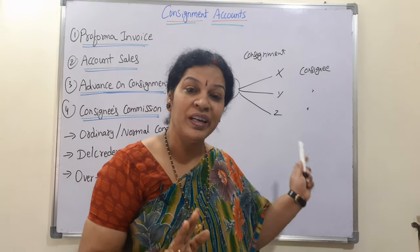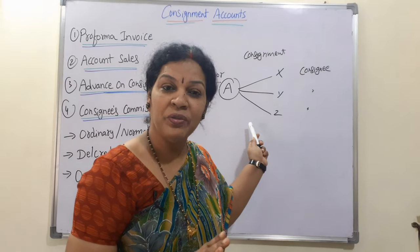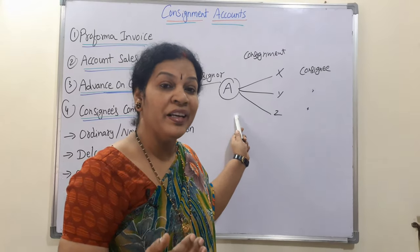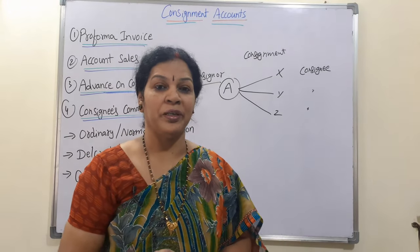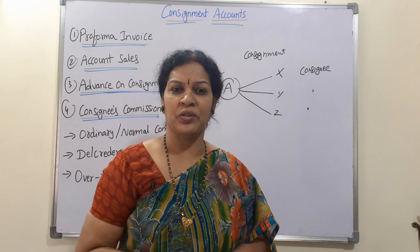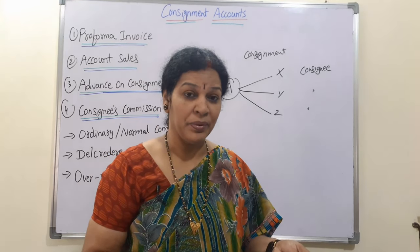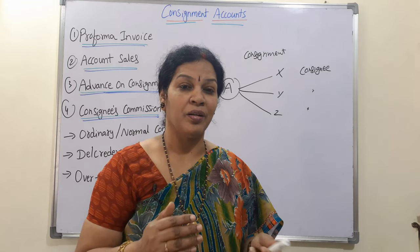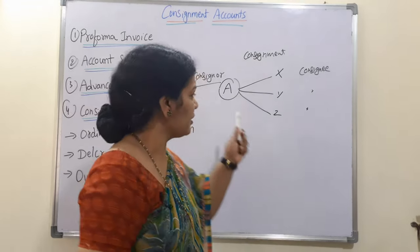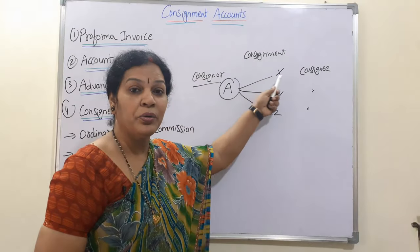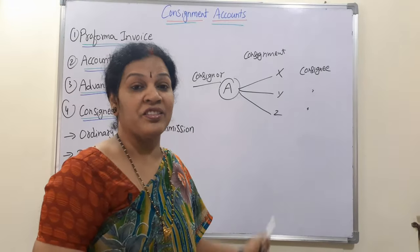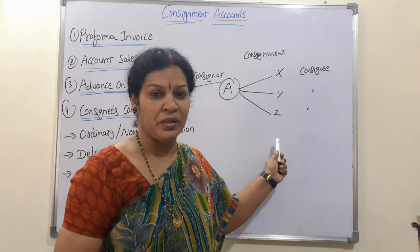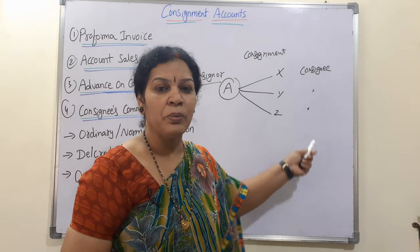One important thing to remember: ownership of the goods does not transfer. Only the goods are transferred — the owner will always be the consignor, that is A. Risk also stays with A only. If goods are destroyed, theft happens, or any kind of accident occurs, the loss and risk is with A only — not with X, Y, Z. X, Y, Z are only agents acting on behalf of A.